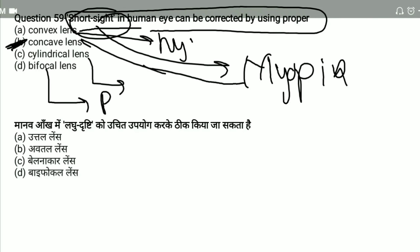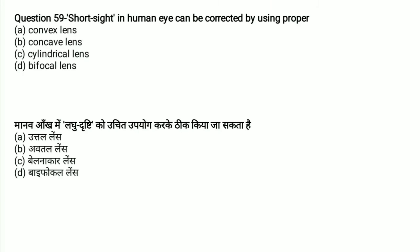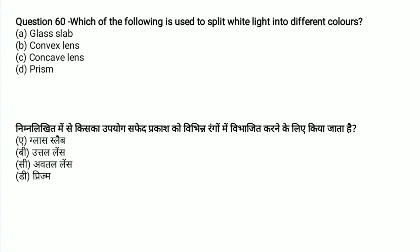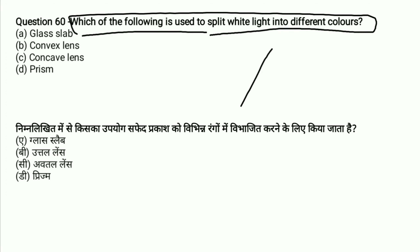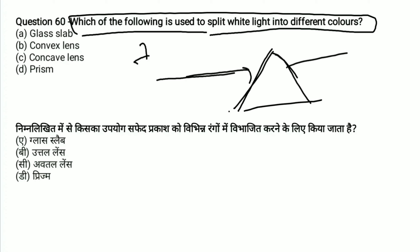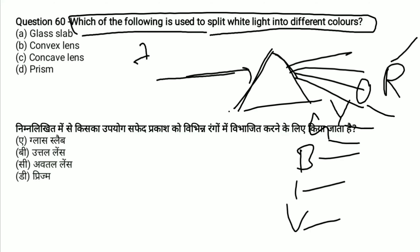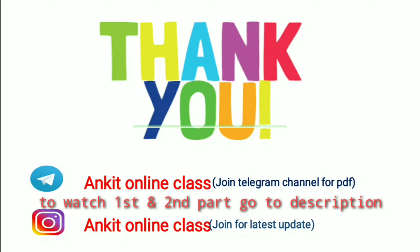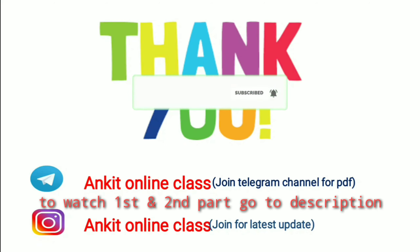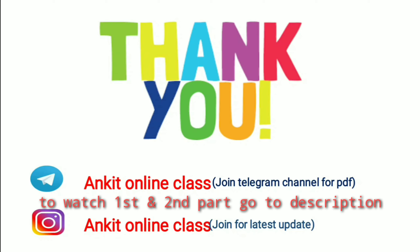Which instrument is used to split white light into different colors? White light contains seven different colors in combination. A prism is used to split white light into its spectrum — VIBGYOR: violet, indigo, blue, green, yellow, orange, red. The answer is prism. That was our session — please like, share, and comment if you enjoyed this video. Thank you.